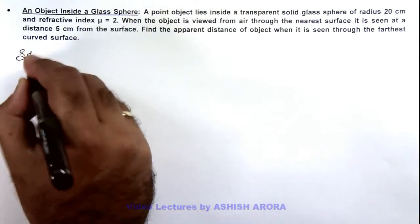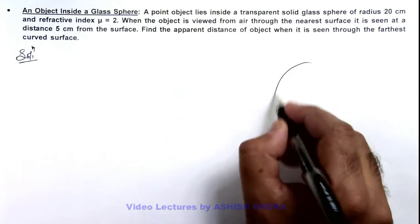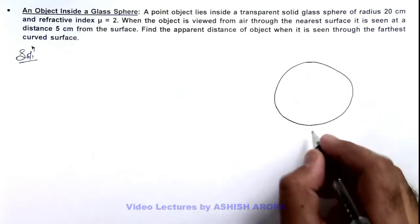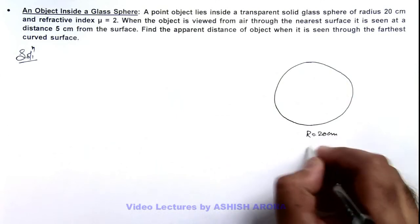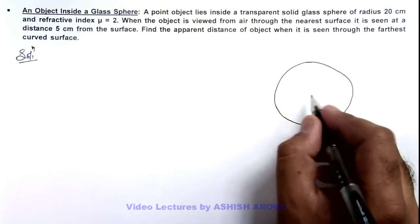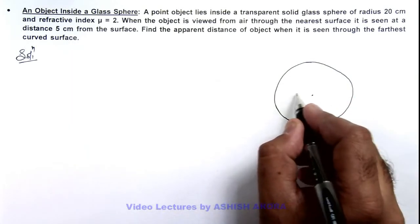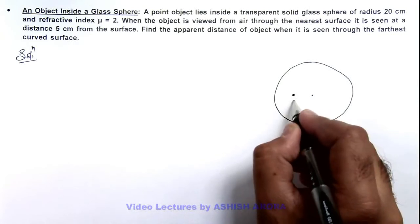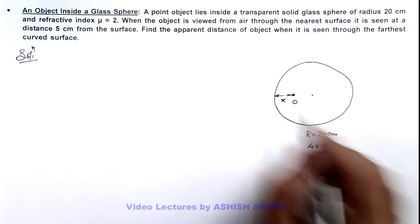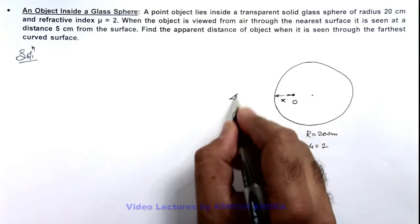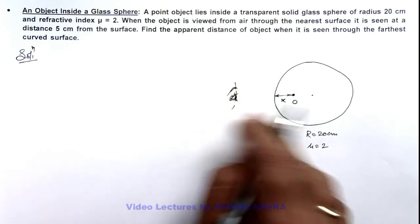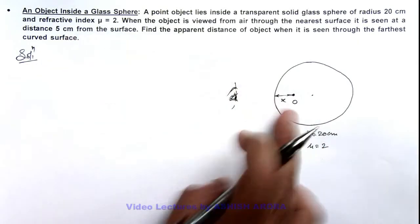If we draw the picture of this situation, we can see this is the solid glass sphere having radius 20 centimeter and refractive index 2. There is a point object located at a distance x from the nearest curved surface. When it is seen by an observer from this side, we are given that it appears to be at a distance of 5 centimeter from the surface.